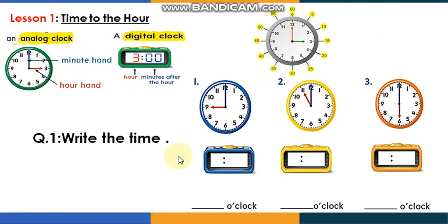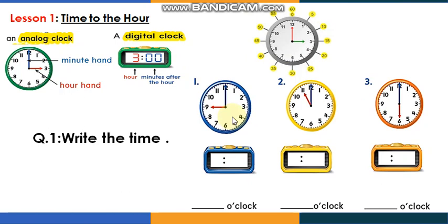Here are the analog clocks and we need to write the time on the digital clock. I'll give you some time to look at these clocks and try to read the time. Remember the steps — look at the short hand first, then the long one. The short one is for the hour and the long one is for the minute.